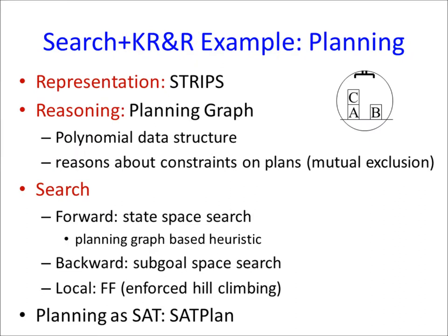Then we did planning. Same pattern — representation changes to STRIPS: actions, preconditions, and effects in first-order logic. Reasoning is done via planning graphs, which give polynomial-time inference about solvability and also provide heuristics. The search algorithm is forward state-space search, and you can also do backward search or local search. One of the most famous local search planners, FF (Fast Forward), was state of the art until two years ago. You can also use SAT to solve planning problems — that's called SAT plan.